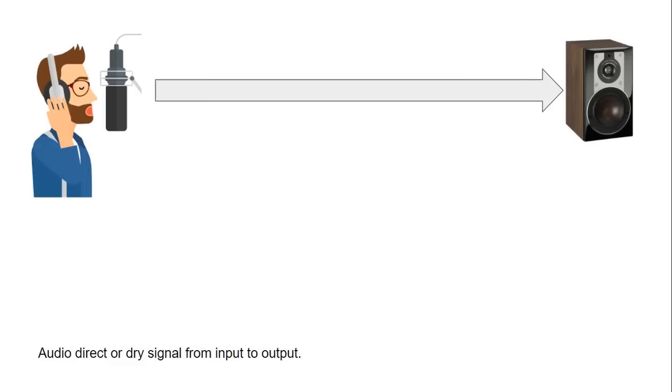An audio signal is called direct or dry when the signal is fed from the input directly to the output with no effects or processing. But sometimes audio processing is required to change the tonal balance as well as the dynamics of an audio signal, whether it's coming from a microphone or line level or going to a specific output.